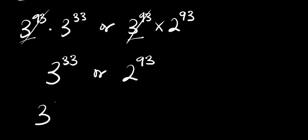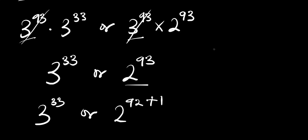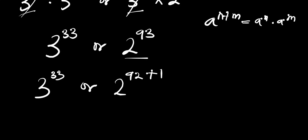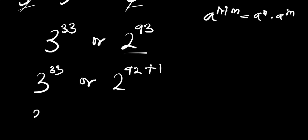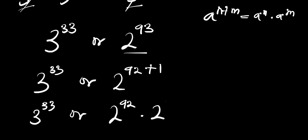We have 3 to the power of 33 versus 2 to the power of 92 plus 1. Applying the identity again — a to the power of m plus n equals a to the power of m times a to the power of n — we get 3 to the power of 33 versus 2 to the power of 92 times 2, since 2 to the power of 1 is 2.